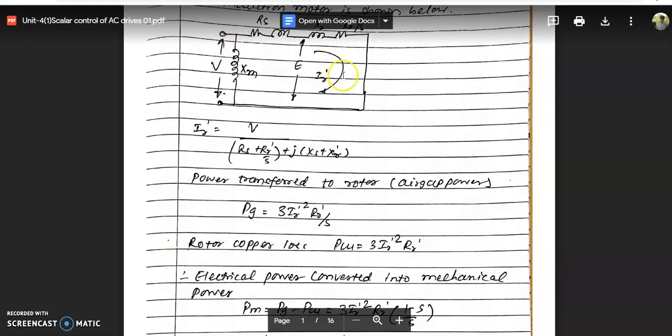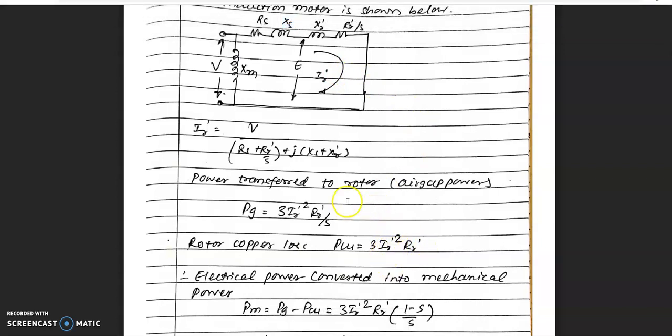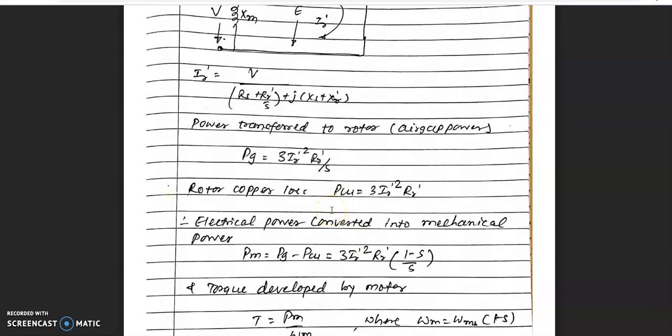The only deduction is rotor copper loss, which is 3 × I²r × R'r. The remaining power develops mechanical power. So mechanical power equals air gap power minus rotor copper loss.